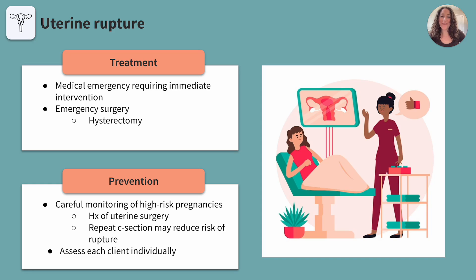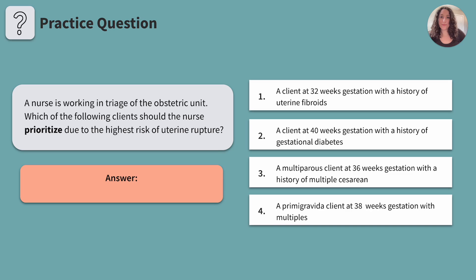Now that we've covered uterine rupture, let's run through a practice question. A nurse is working in triage of the obstetric unit. Which of the following clients should the nurse prioritize due to the highest risk of uterine rupture? One, a client at 32 weeks gestation with a history of uterine fibroids. Two, a client at 40 weeks gestation with a history of gestational diabetes. Three, a multi-parous client at 36 weeks gestation with a history of multiple cesareans. Or four, a primigravida client at 38 weeks gestation with multiples.